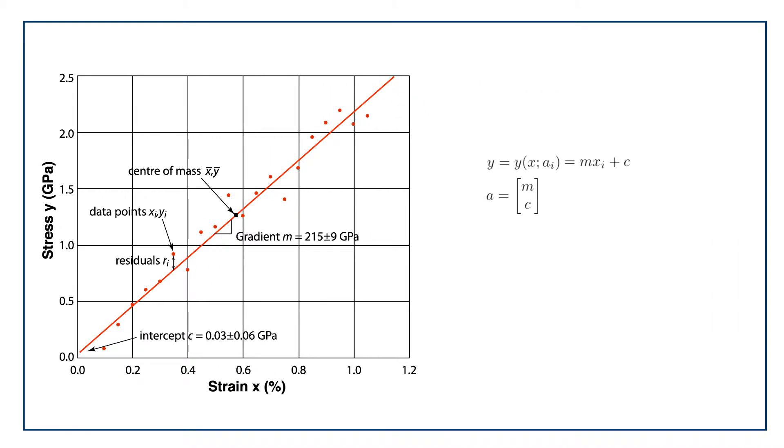Now, I can model my straight line y here as being a function of the eye observations x_i and a vector a of the fitting parameters. In the case of a straight line y equals mx plus c, then the parameters in the vector a would be the gradient m and the intercept c of the straight line.